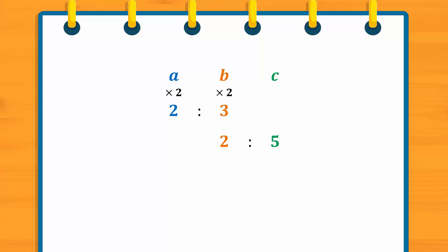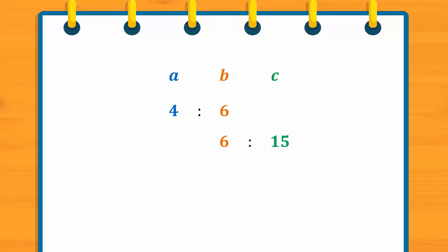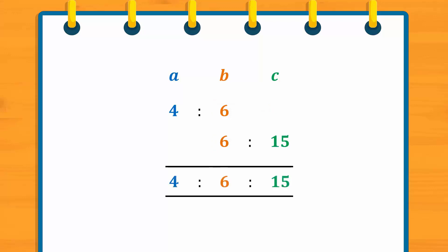We do so by multiplying the numbers in the top ratio by 2 to get 4 to 6, and multiplying the numbers in the bottom ratio by 3 to get 6 to 15. Notice that now the common element is 6, so the continued ratio is 4 to 6 to 15.